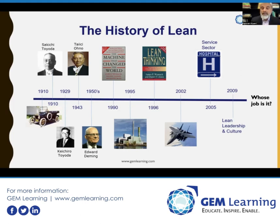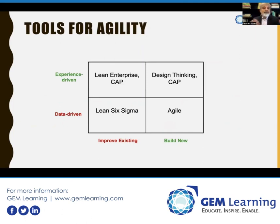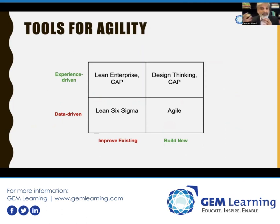We have many tools available, and I've divided them in the form of a quad. On the bottom axis: are you building something new in the company, or are you improving something already happening? On the vertical axis: is it data-driven work or experience-driven work? That gives us four quadrants. Let's talk briefly about the tools in each.